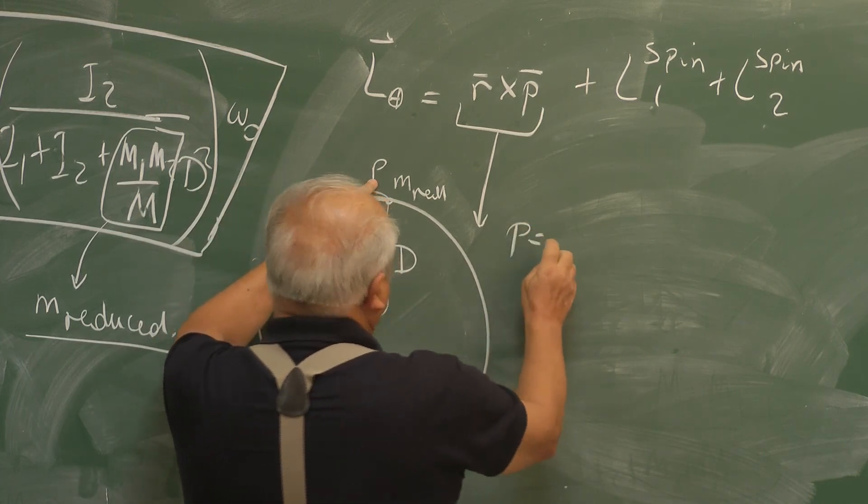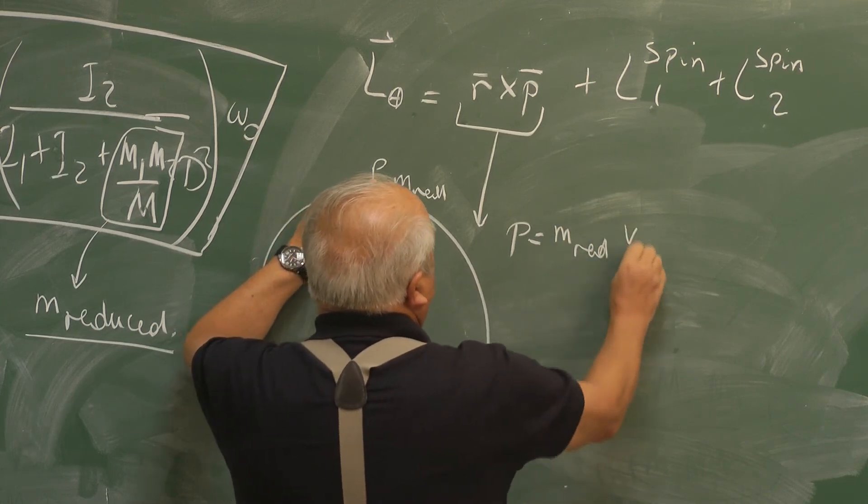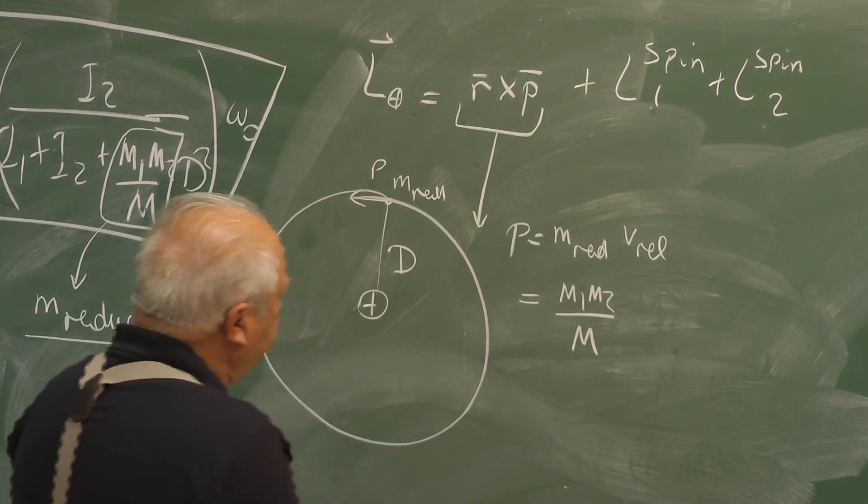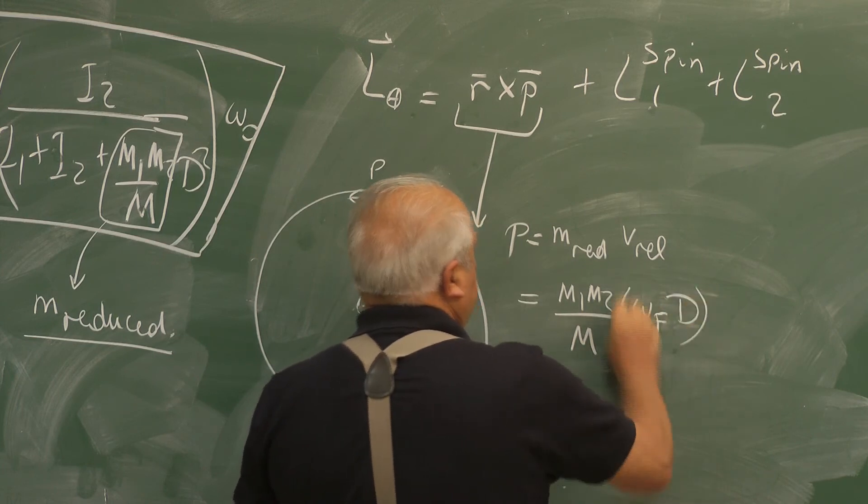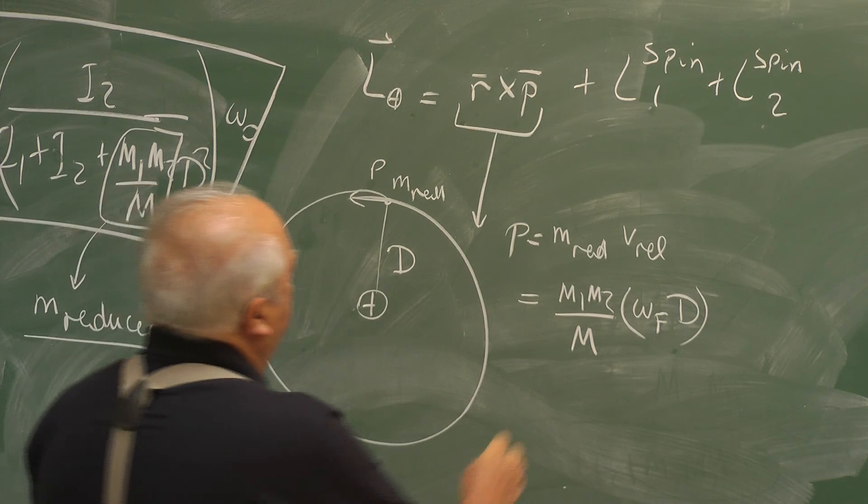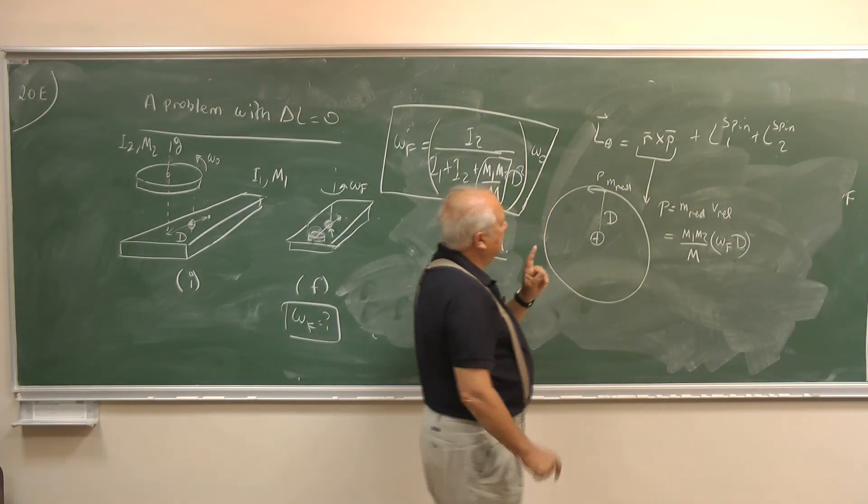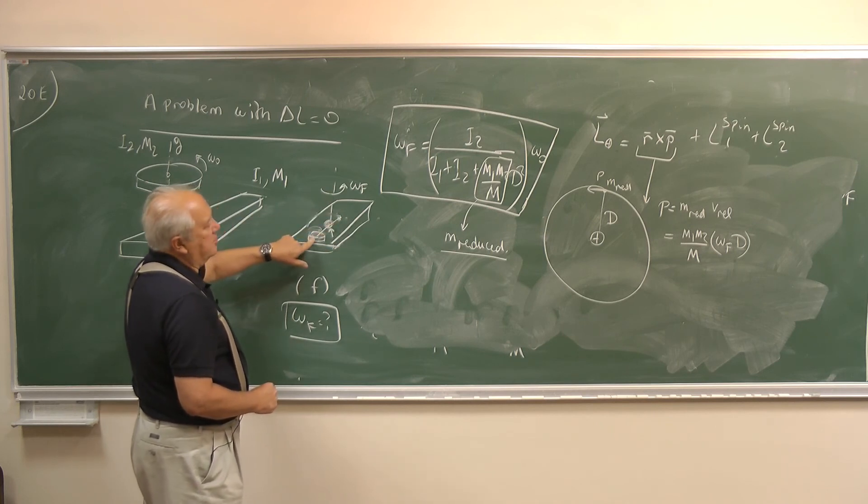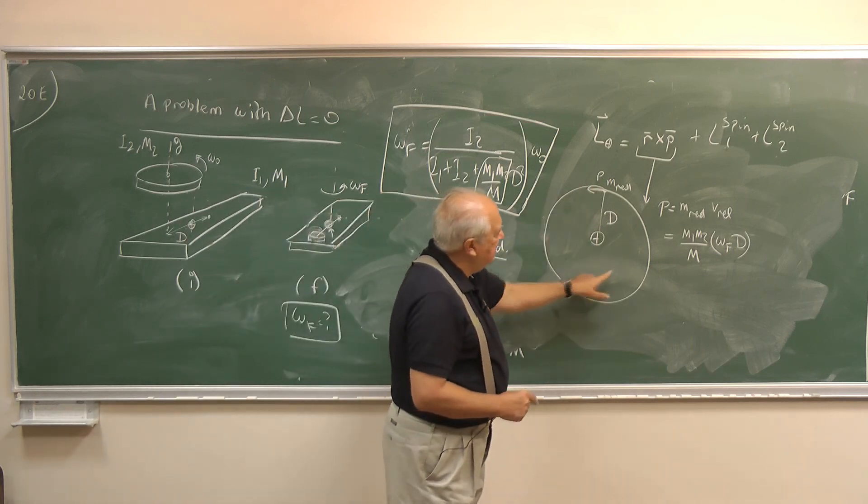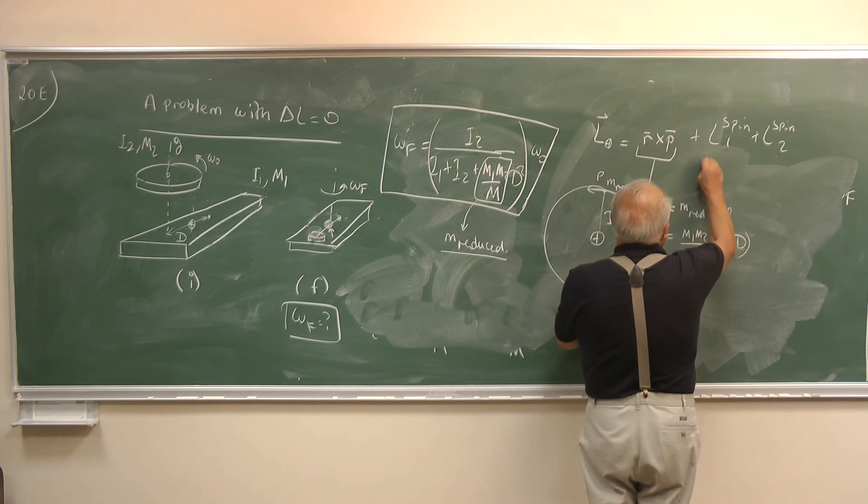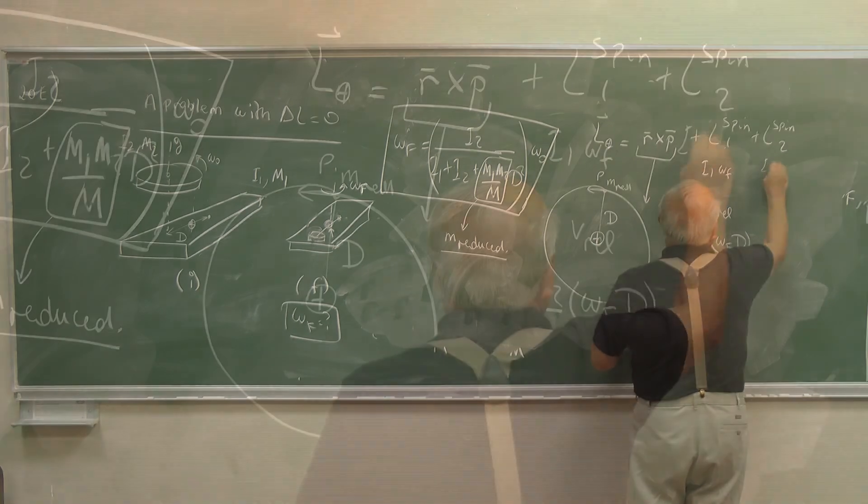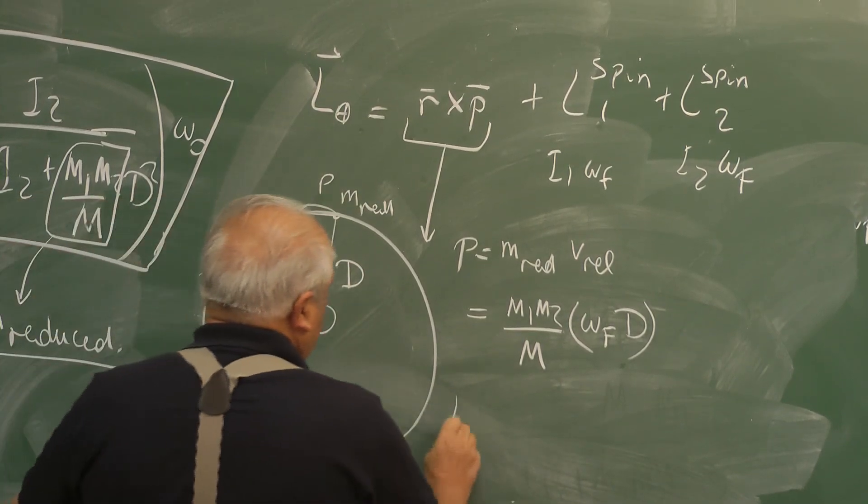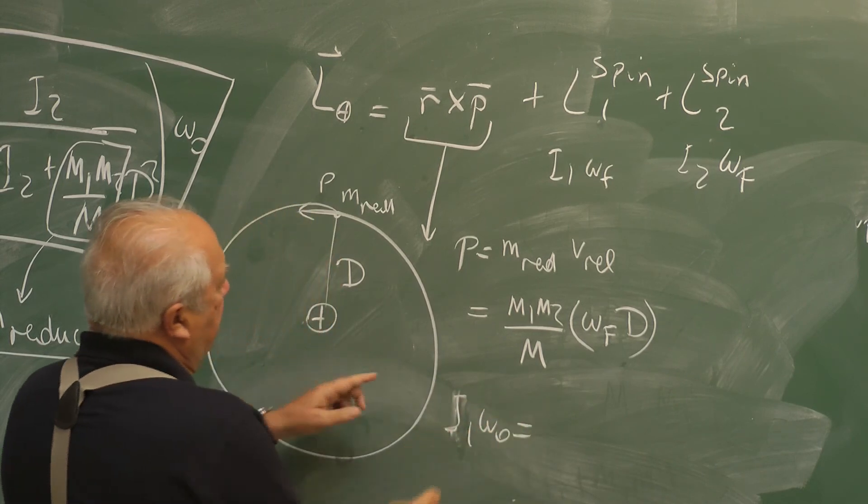And the other ones are the spin of the disc about its own axis. So this is easy to write. This distance is D, that's the distance between the two masses D. So P is M reduced times V relative and this is M1 M2 over M. What is V relative? Well that's omega F times D. What is this one now? These are all locked in motions.